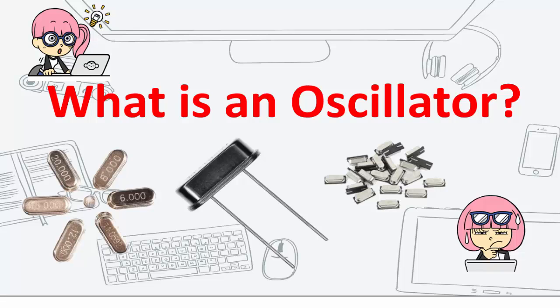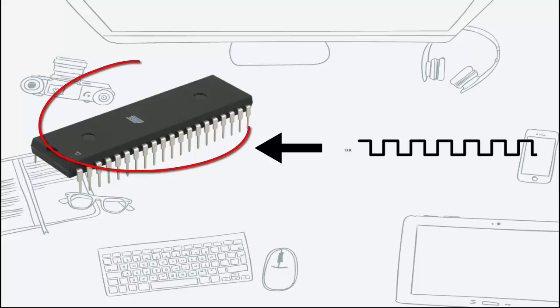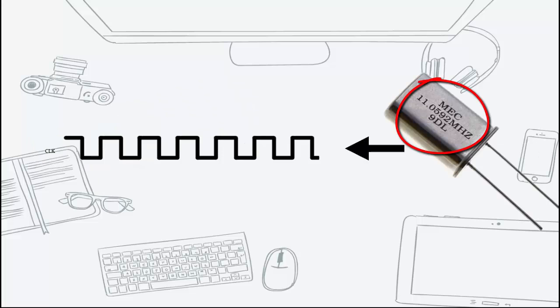Hi. Welcome to JLABS. Every microcontroller requires a clock signal which is a continuously running fixed frequency logic square wave and is generated by an oscillator.